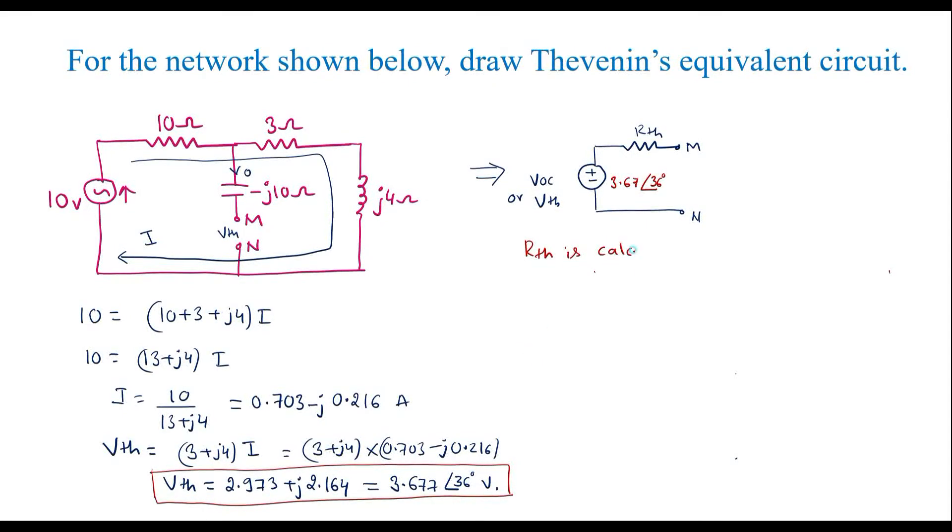RTH is calculated as follows: RTH is nothing but the equivalent resistance between terminal M and N, keeping all active sources set equal to zero. So here in the circuit we have only 10 ohm and 3 plus J4 will be in parallel. That is, 3 and J4 are in series, so 3 plus J4 will come in parallel with 10.